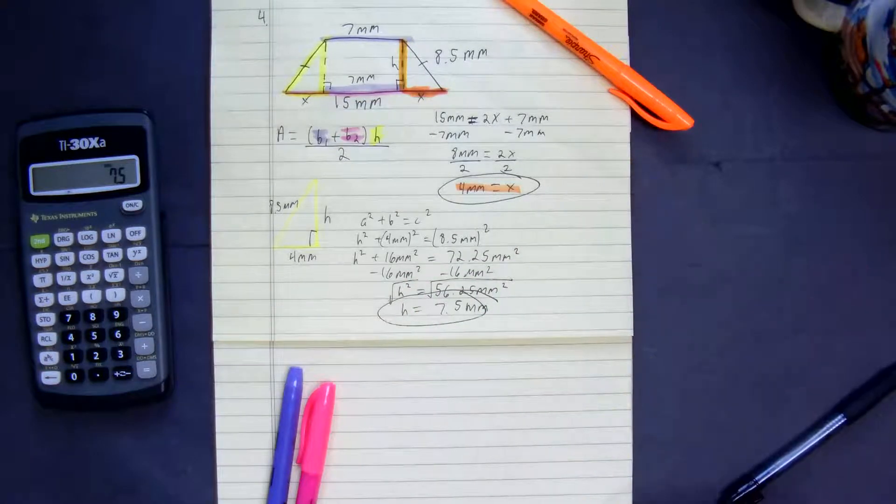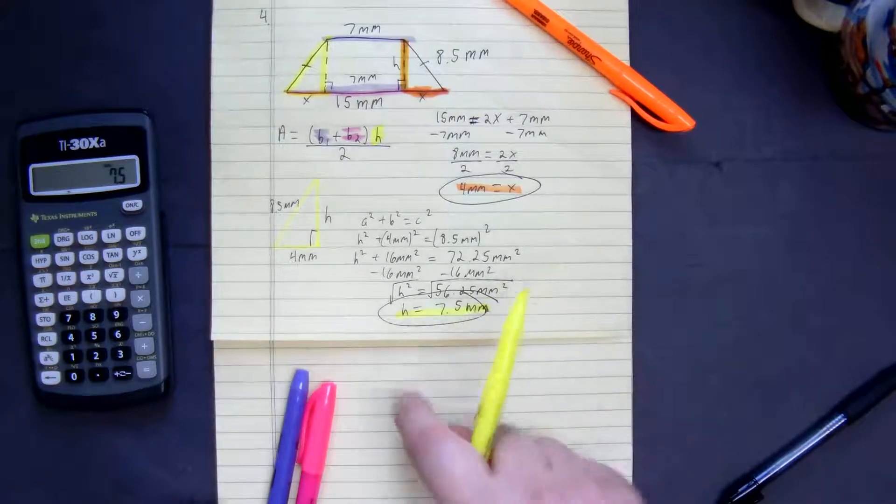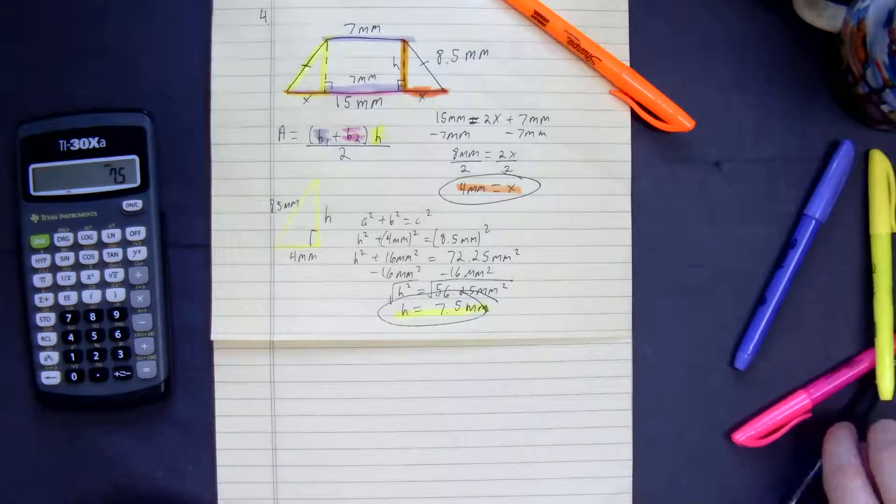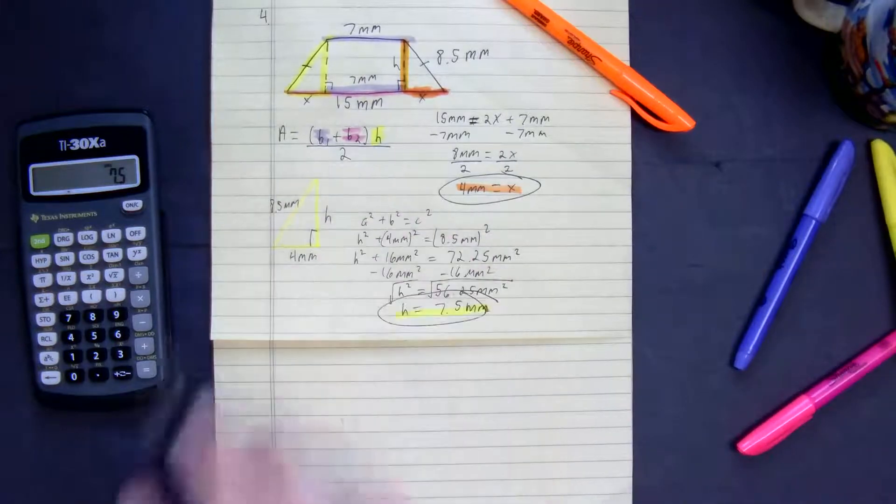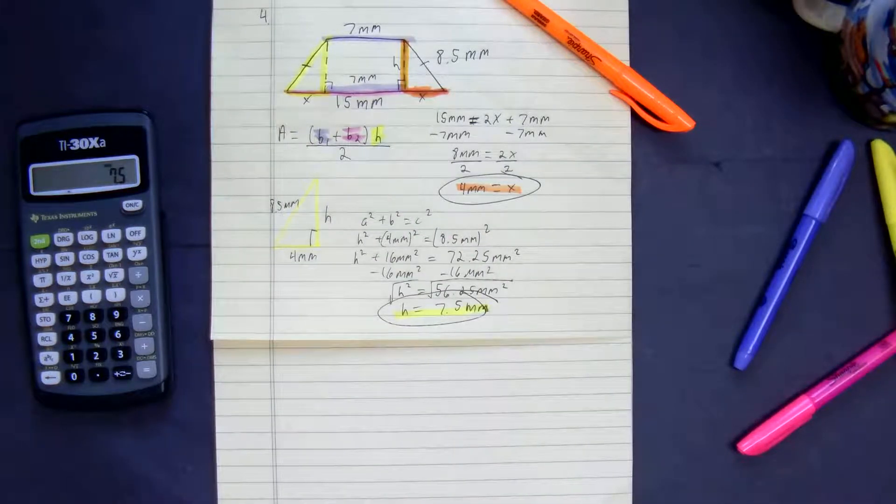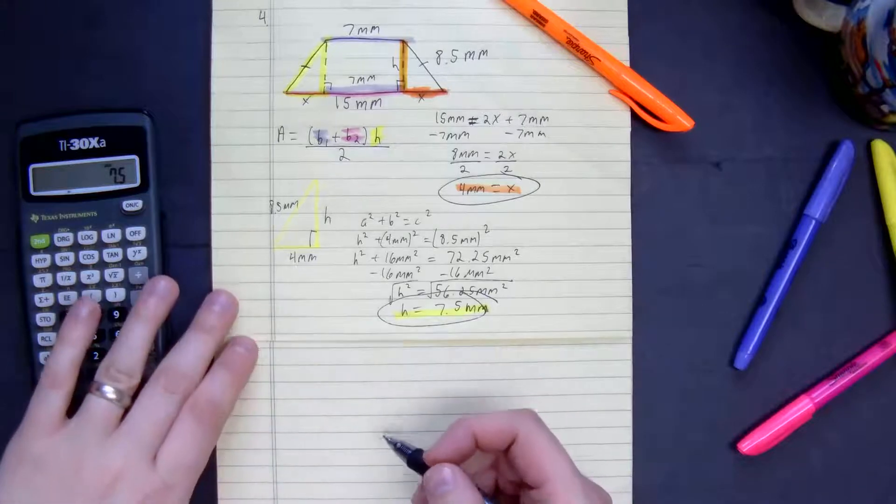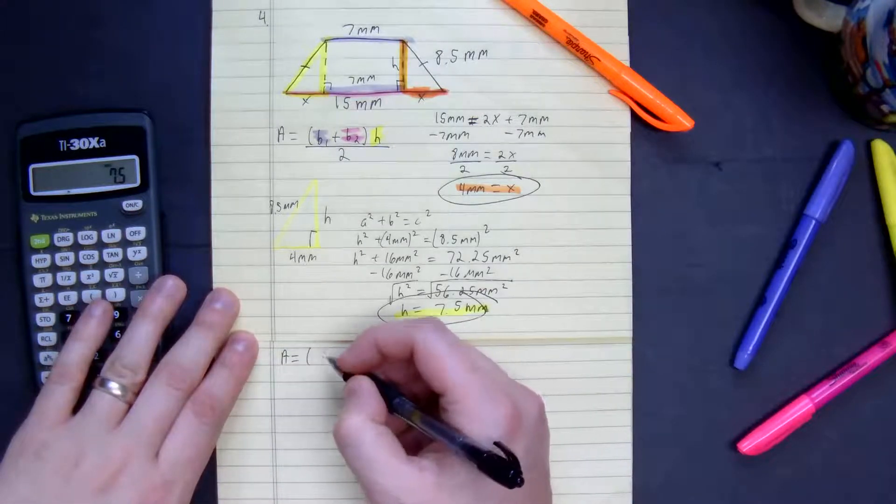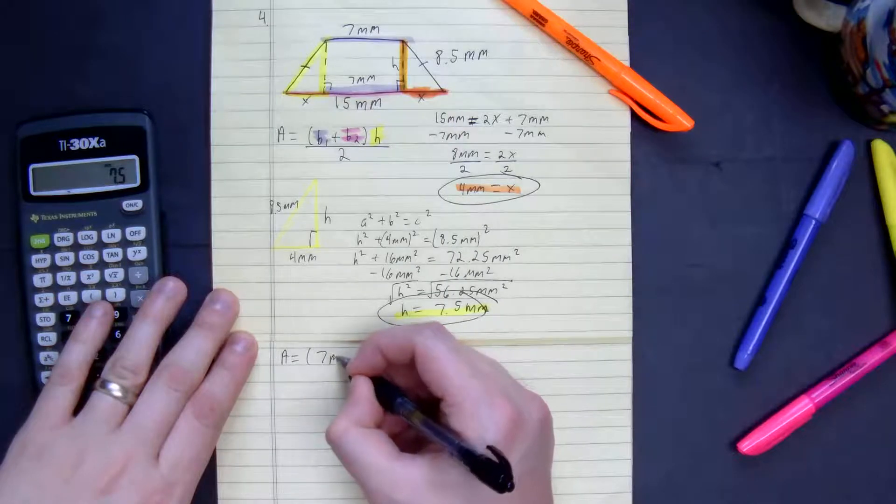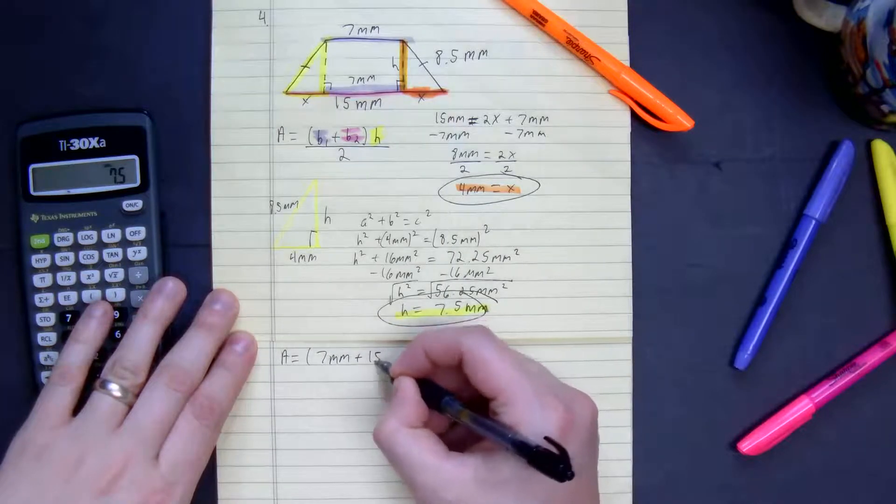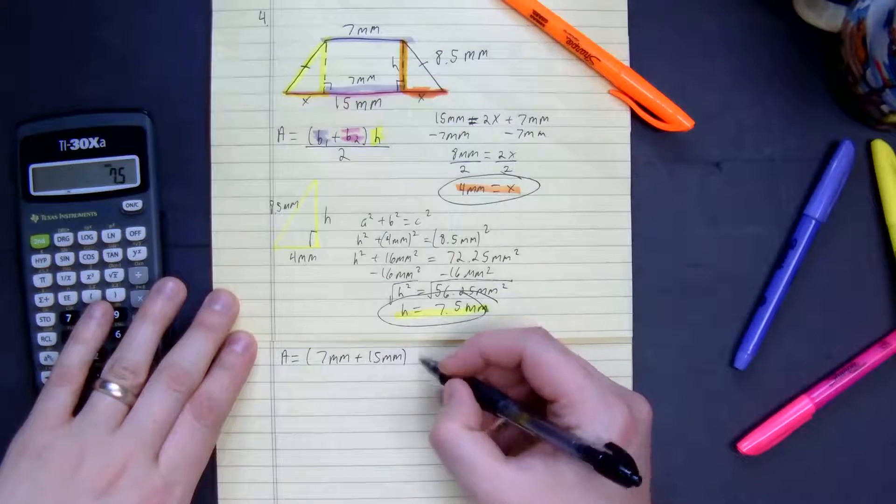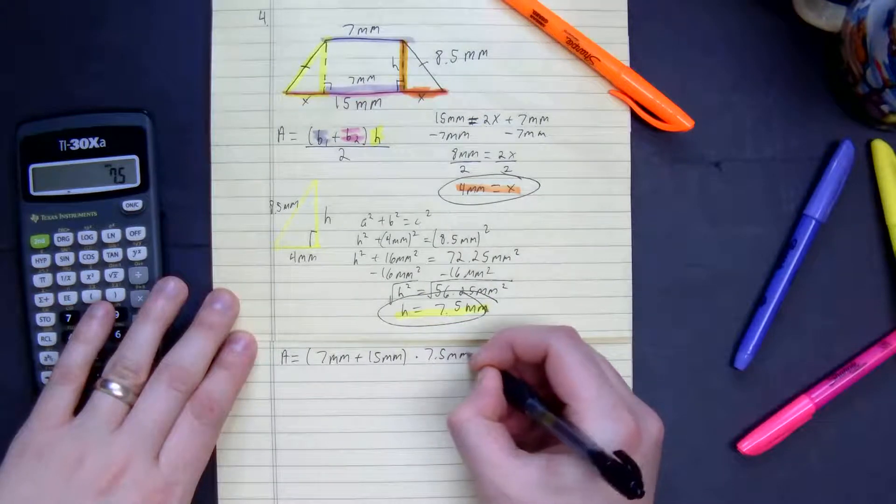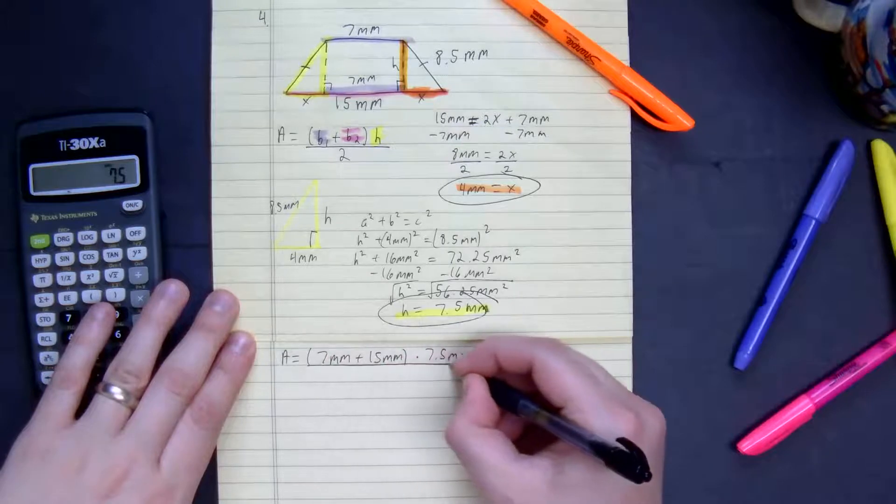We found the height. So down here, I'm going to just finish up this problem. So what we do, the base, 15 millimeters. So let's plug it in. Area is equal to 7 millimeters plus 15 millimeters times the height, which is 7.5 millimeters, all over 2.